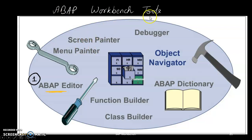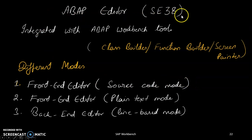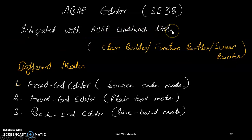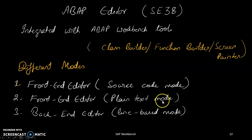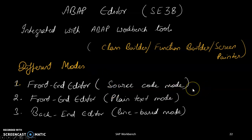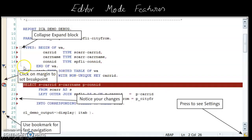The different tools: first is the ABAP Editor (SE38). It is integrated with ABAP workbench tools including function builder, class builder, and screen painter. There are two editor modes: the frontend editor with source code mode (newer, more advanced — similar to C or C++ with line breaks and auto-complete), and the backend editor with plain text/line-based mode (older version).